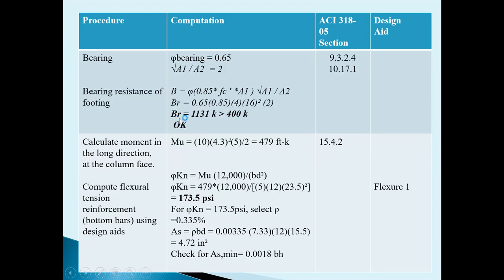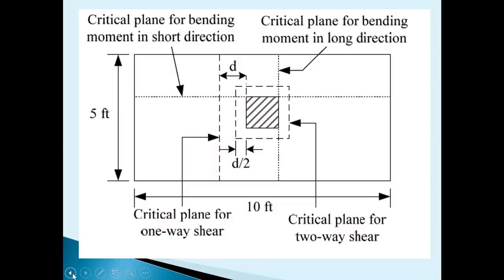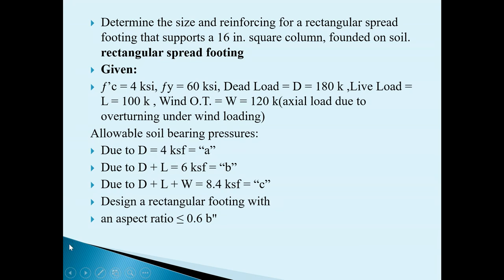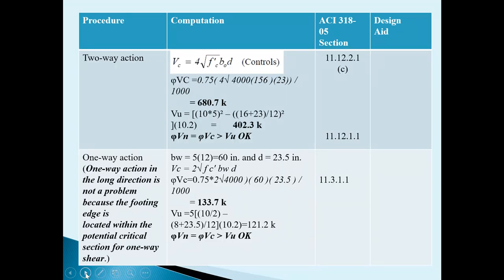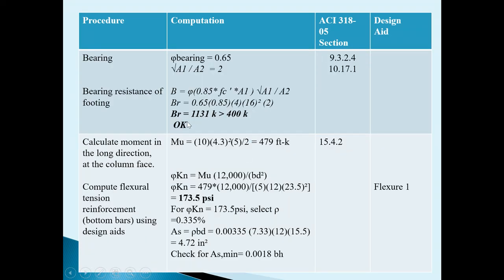Next is the bearing check. The phi factor for bearing is 0.65, whereas it was 0.75 for shear. The ratio A1/A2 is the ratio of the smaller area to the larger area. Using the bearing resistance formula (same as used for square footing), the least allowable bearing capacity is 4 KSF = 400 K. The bearing capacity of the footing is 1131 K, which is more than the allowable 400 K, so the footing is safe in bearing.